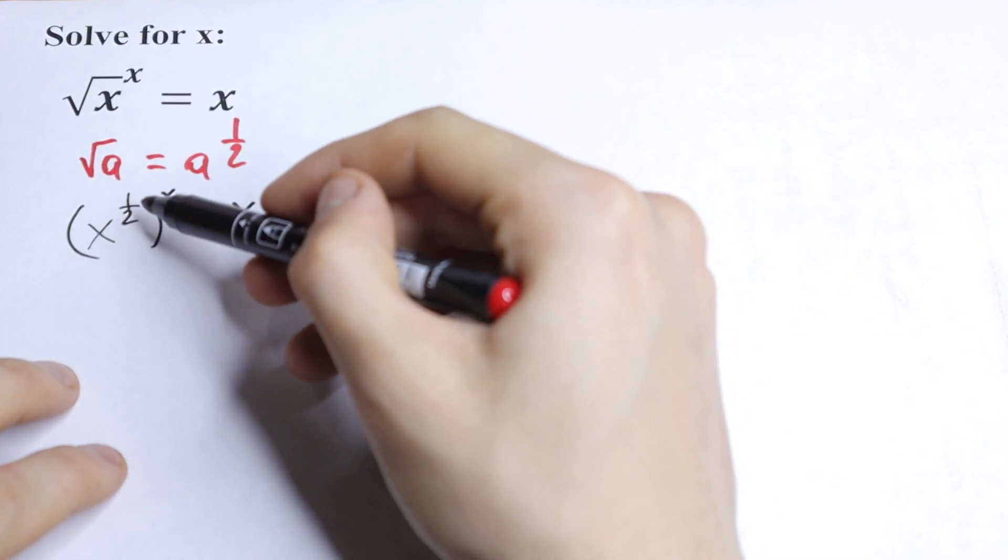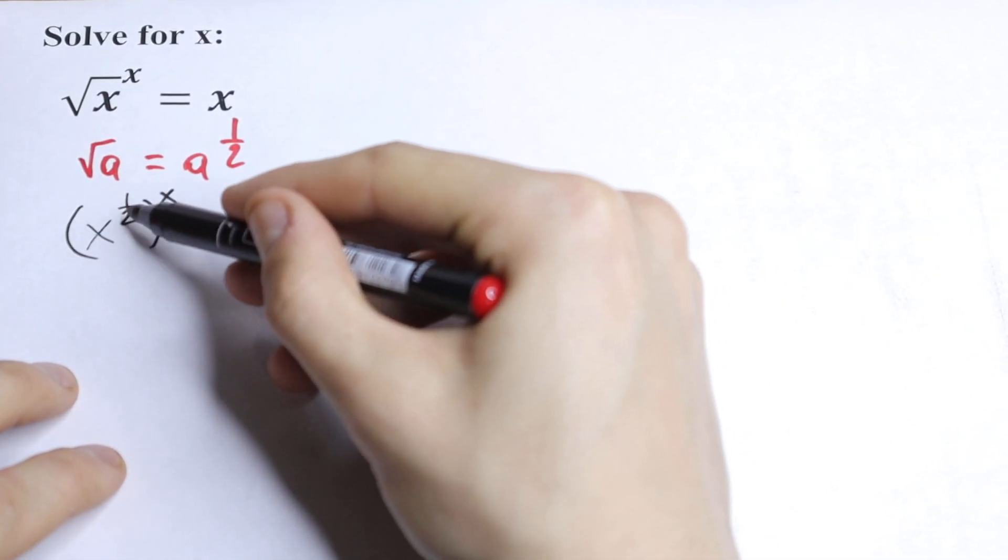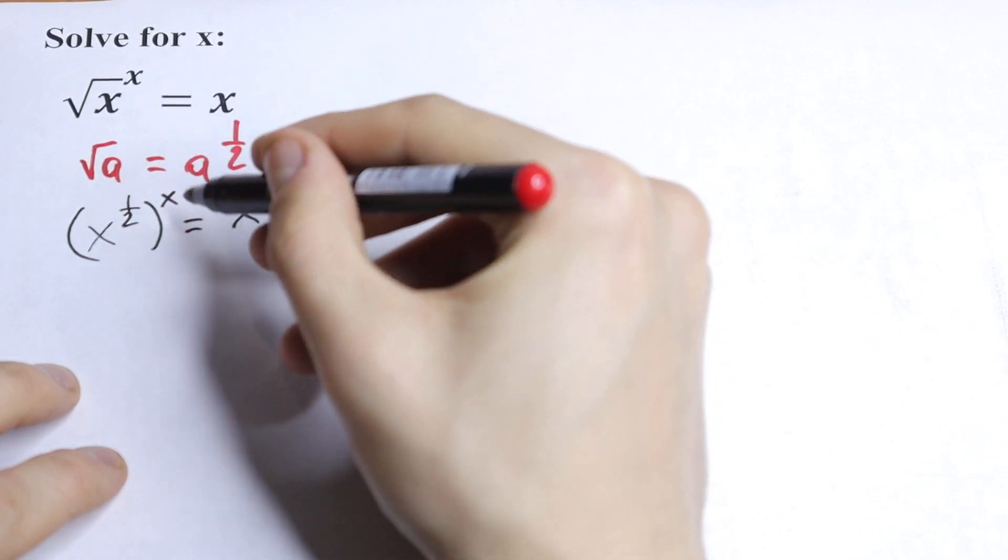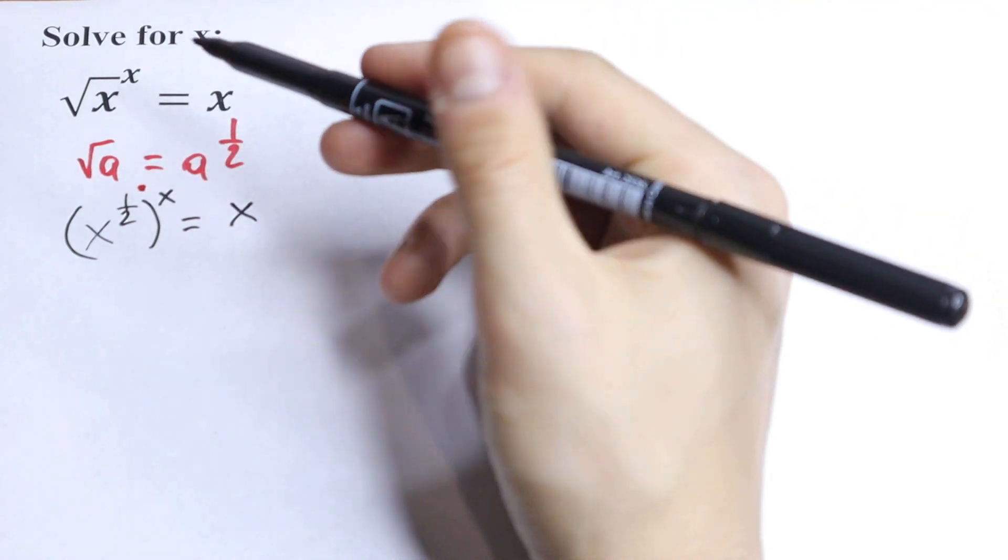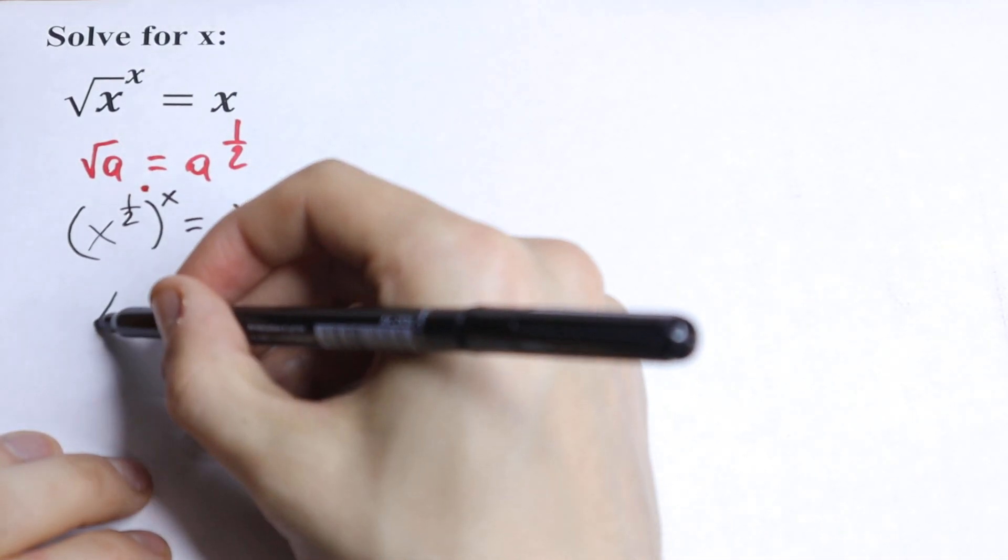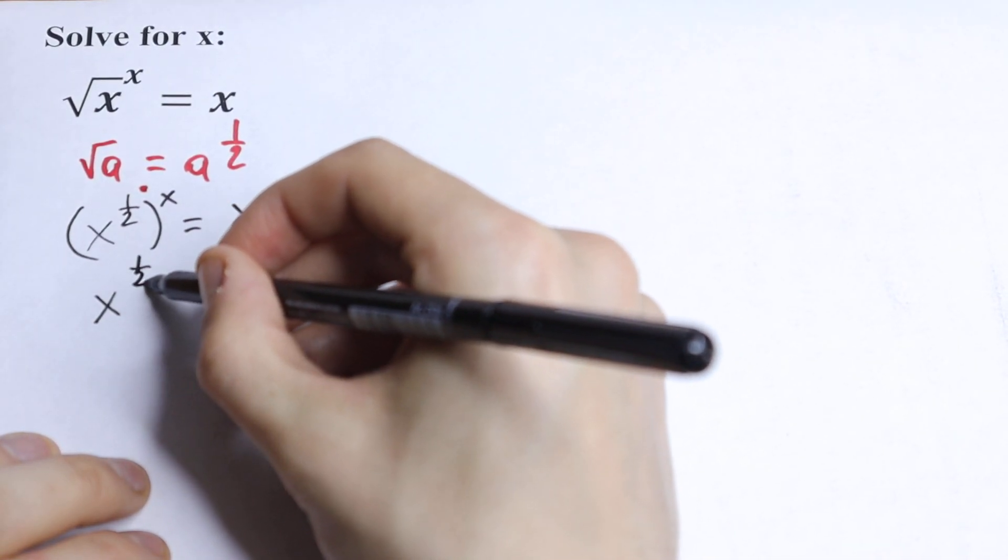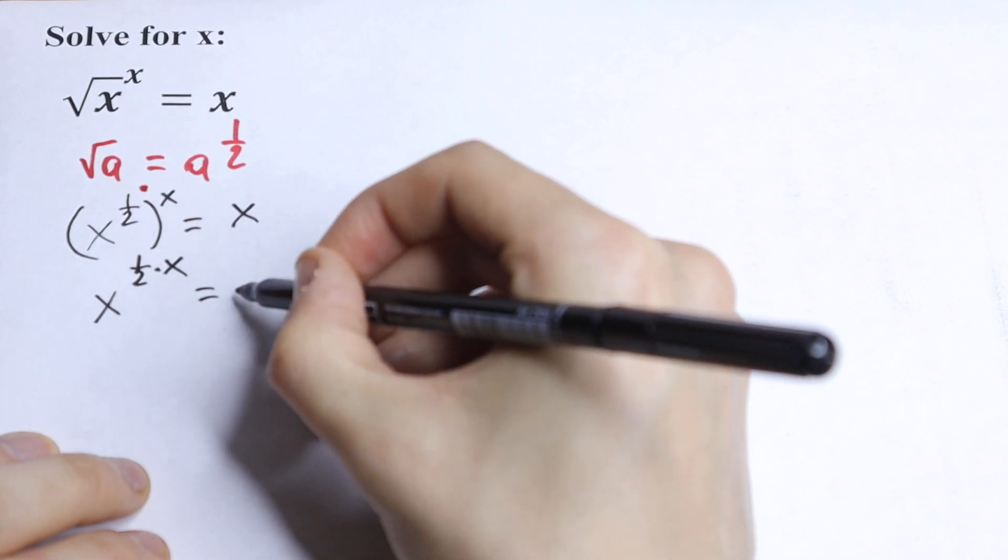What we're going to do next? Of course, we have a really good case because we have parentheses and we raise this x to the power 1/2 to the power x, and we need to multiply our exponents, our powers. So let's do this. We will have x to the power (1/2 times x) equal to x.